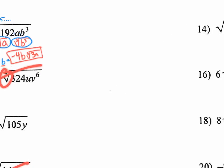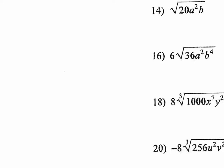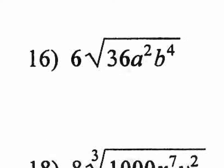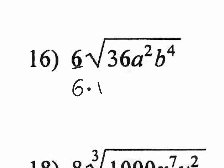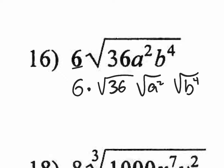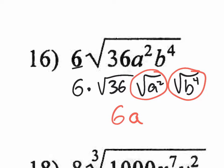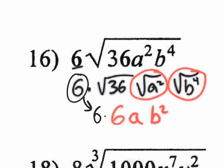Number 16 is a square root problem. The 6 out in front stays as a 6. Split the square root: the square root of 36 is 6. The square root of a² — dividing the exponent by 2 — is just a. The square root of b⁴ is b² because 4 times one-half equals 2. The 6 out front times 6 from the square root of 36 gives 36. Final answer: 36ab².